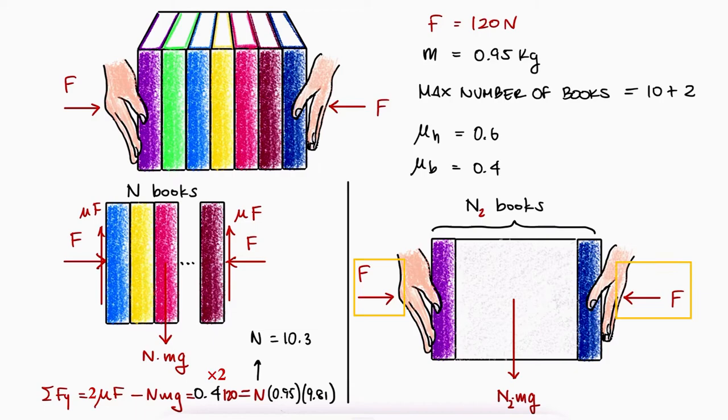The free body diagram of that stack would show a weight of N times Mg, the same compressive forces, and the maximum friction force going up, this time using the static friction coefficient between the hands and the book. Solving for N2, we get 15.45 books.